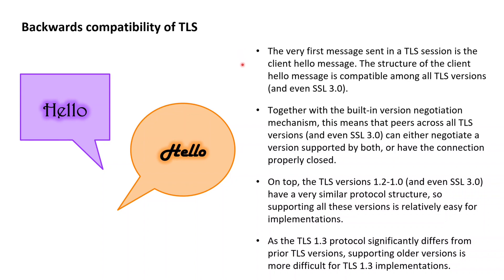This means that all the peers that run any of the TLS versions 1.3, 1.2, 1.1, or 1.0, or run SSL 3.0, can receive a client hello message. And then together with the TLS version negotiation mechanism, they can either negotiate a TLS version that both peers support, or allow for the peers to properly terminate the connection.